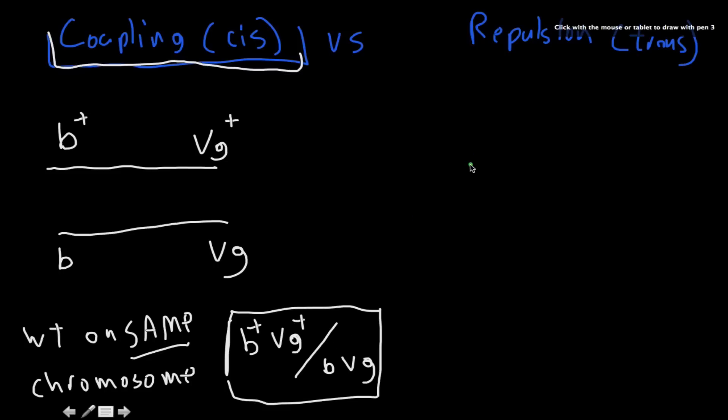And I'll talk about repulsion, which is trans. Well, if this means same, trans as you probably can guess means that we have wild type on inverted arrangements. So we have the wild type here.